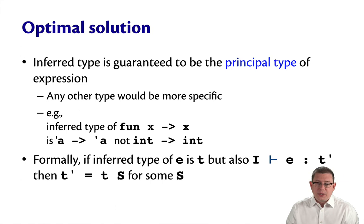To state that formally, suppose you infer the type of E, and you get that the answer is T. But also suppose it's the case that in the initial static environment, you could type check E, and legitimately conclude that it has some other type T prime as well.